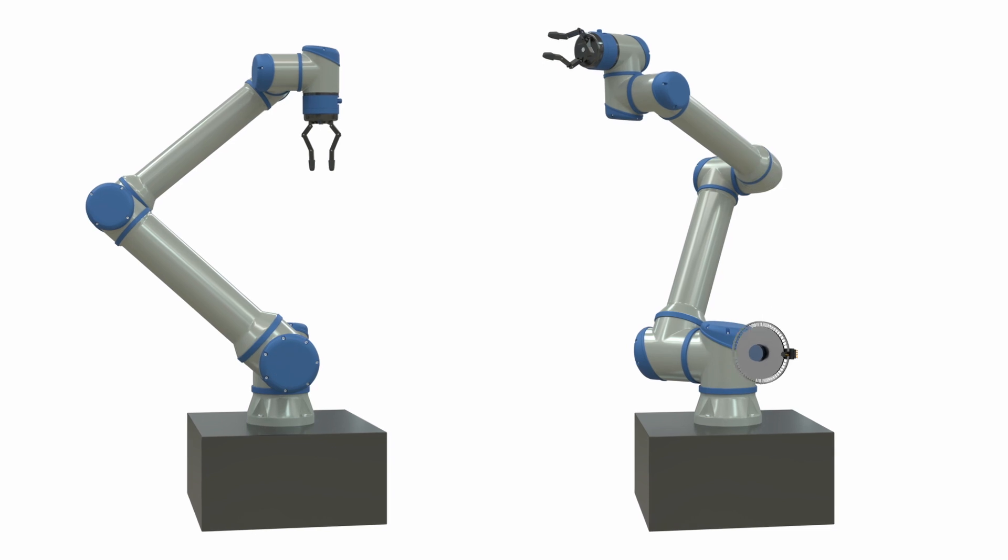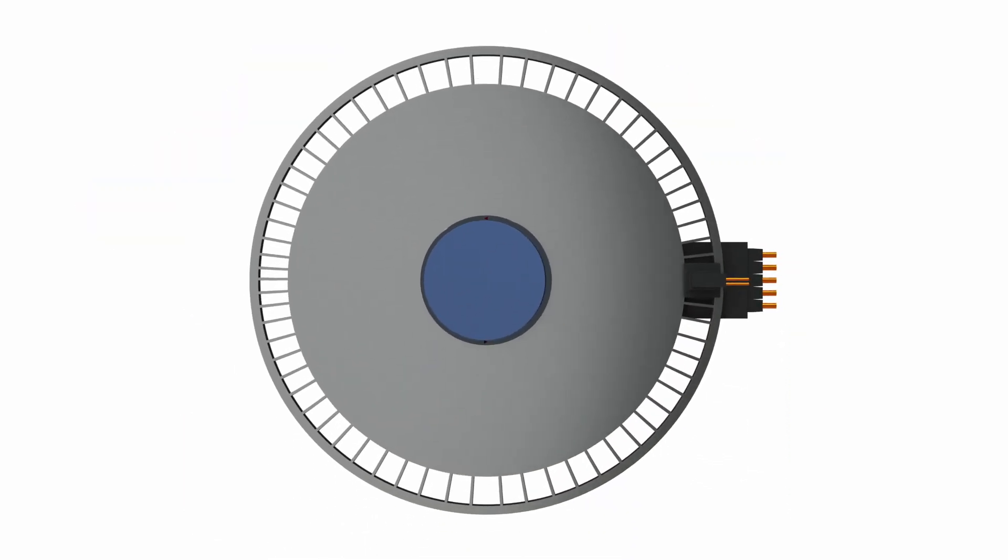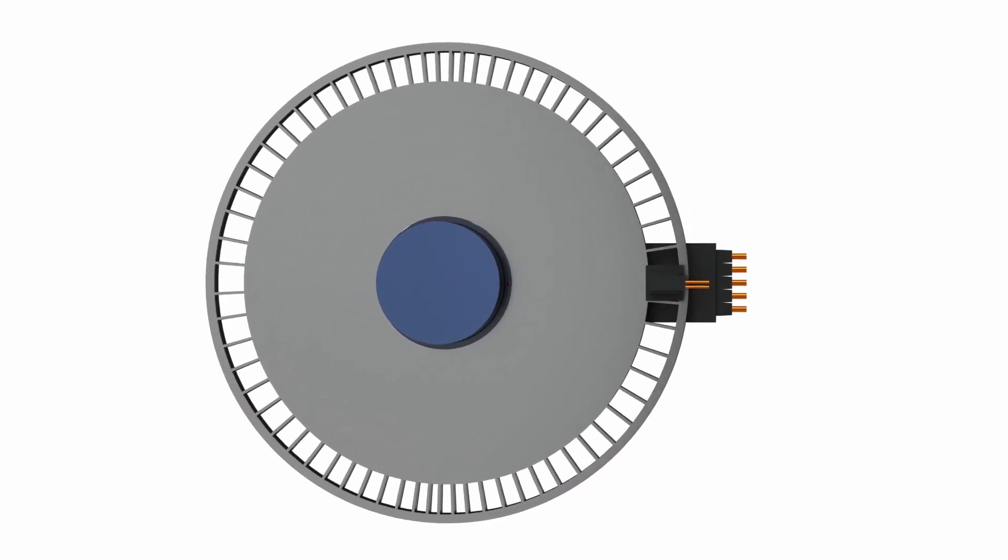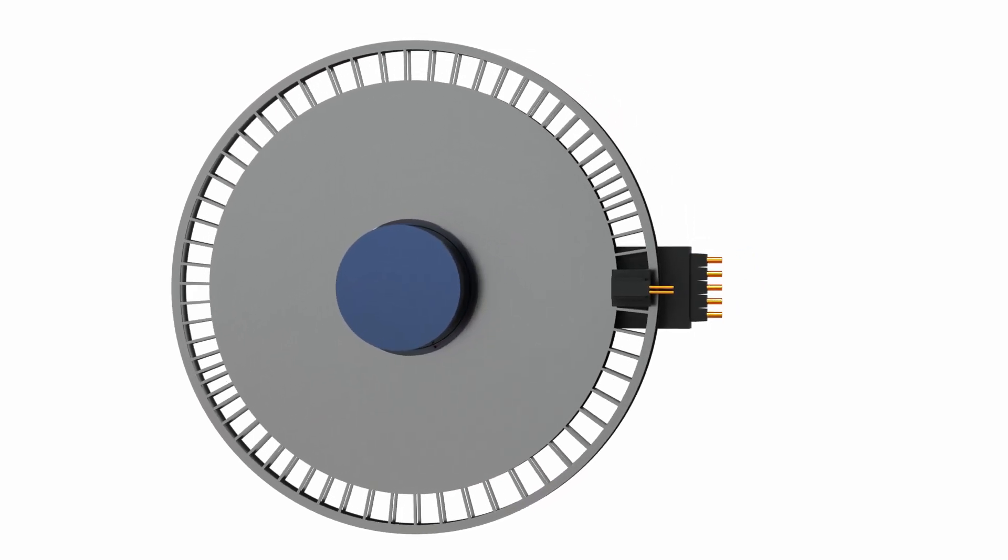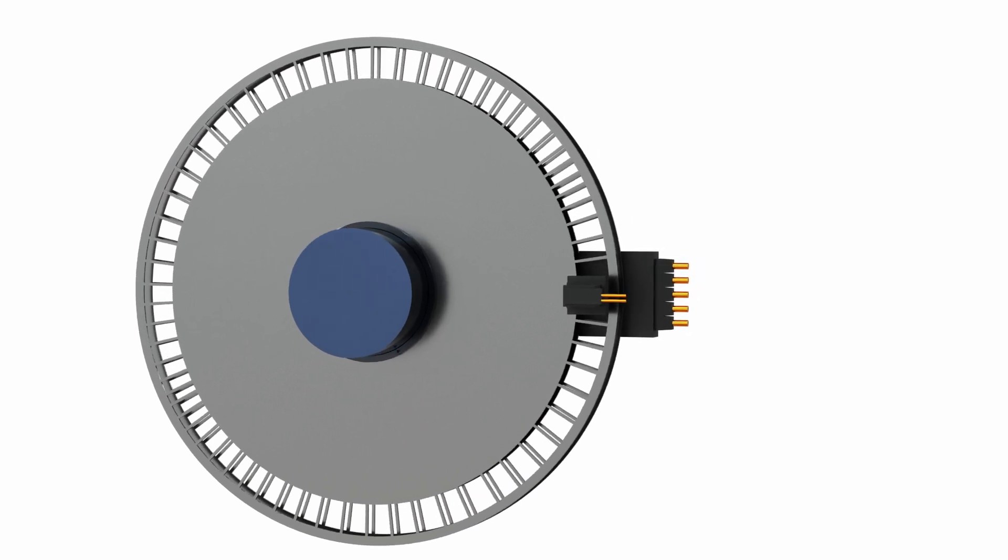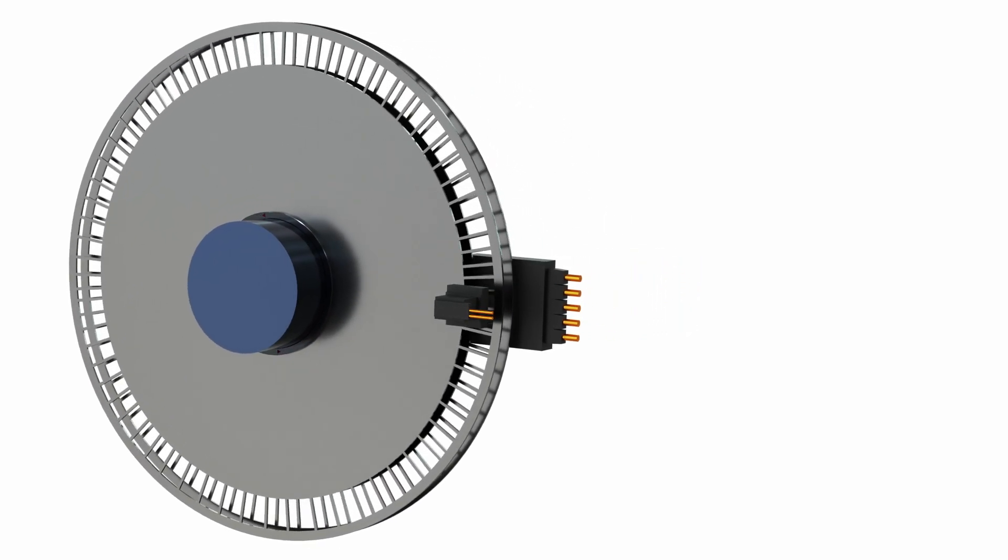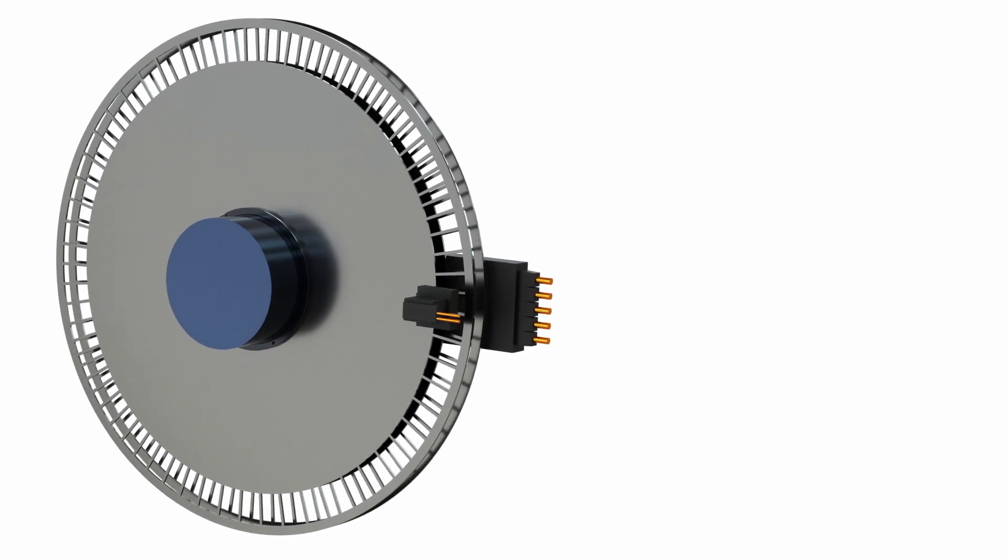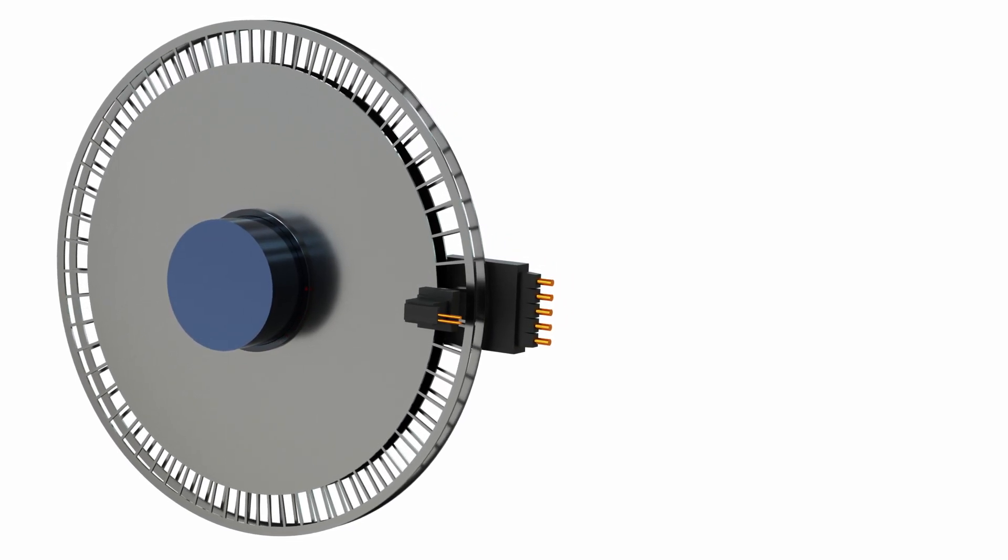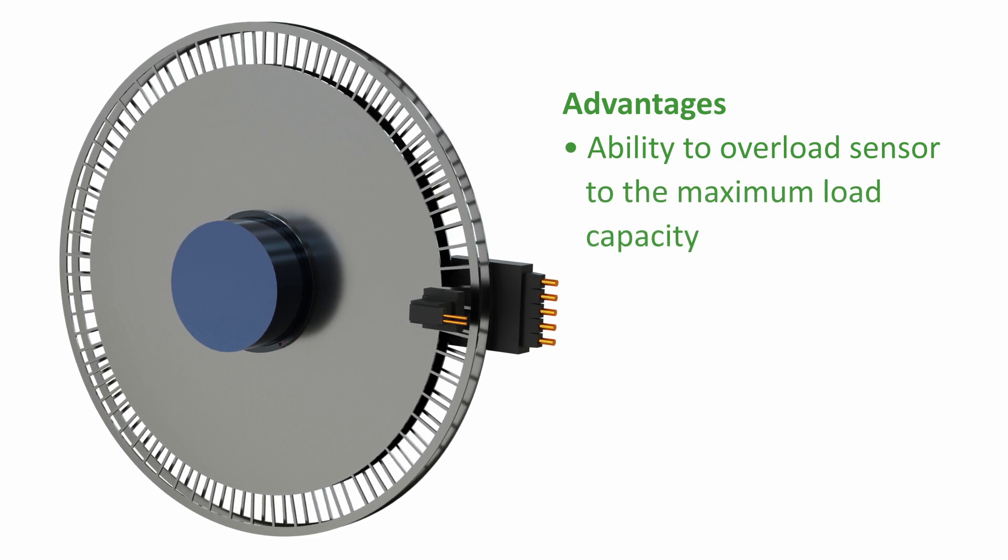Displacement sensors: this method typically uses a pair of measurement discs attached to opposite ends of a shaft. The twist angle of the shaft is measured from the phase difference between the discs through an optical or magnetic measurement. This enables torque to be calculated. The main advantage is the ability to overload the sensor to the maximum load capacity of the twist shaft.